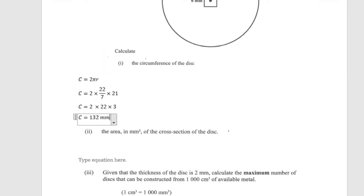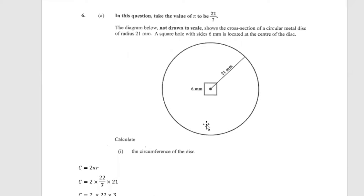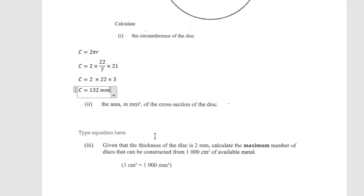Part two asks us to calculate the area in millimeters squared of the cross section of the disc. Remember the disc has a square hole, so that portion is not solid. We need to find the area of the entire disc and then subtract the area of the square hole to get the cross-sectional area.